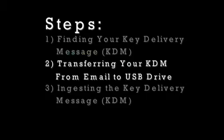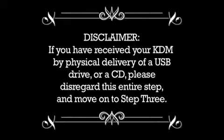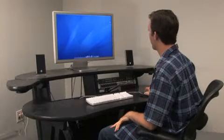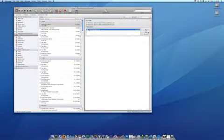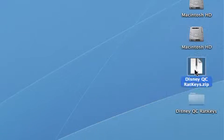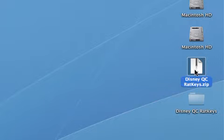Step 2: Transferring your KDM from email to USB drive. If you have received your KDM by physical delivery of USB drive or CD, please disregard this entire step and move on to Step 3. Your emailed KDM needs to be downloaded, unzipped, and placed on the root directory of your USB drive. First, download the file from your email to the desktop of your computer. Double-click the file, and it should unzip the content to a new folder with the same name as the original file on the desktop. If this does not happen, you may not have the proper software to unzip the file, and you should contact your supervisor.